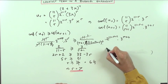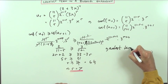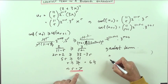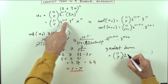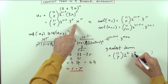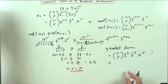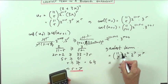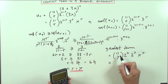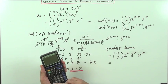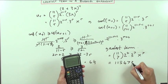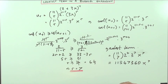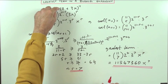So the greatest term is found by substituting r = 7 back in: C(11,7) · 2^(11-7) · 3^7 · x^7, which is C(11,7) · 2^4 · 3^7 · x^7. Note that C(11,7) = C(11,4) = (11·10·9·8)/(4·3·2·1). Evaluating on the calculator gives the numerical coefficient times x to the power 7 - that is the greatest term in this expansion.